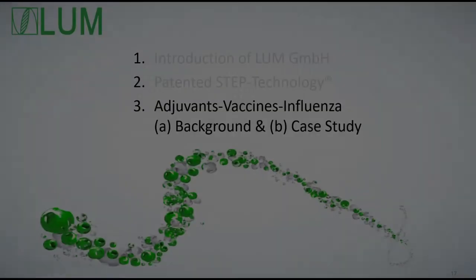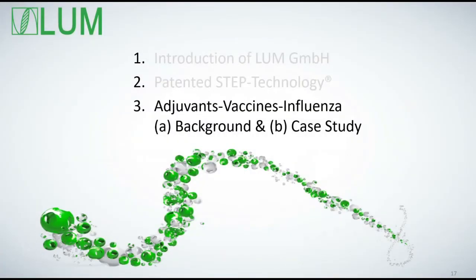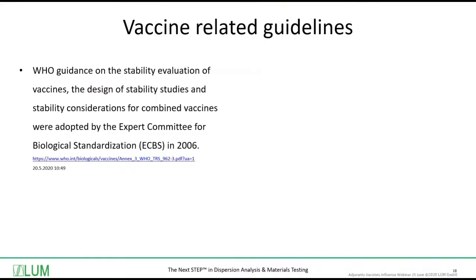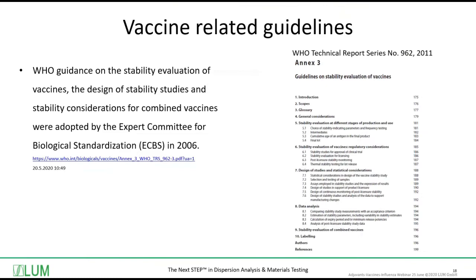Coming now to adjuvants, vaccines, and influenza. In the beginning, I would like to give you some background information, and then share one case study with you. This is issued by the World Health Organization — Guidance on the Stability Evaluation of Vaccines from 2006 — and the more recent version published in 2011, the Guidelines on Stability Evaluation of Vaccines. It's a very nice and interesting document.